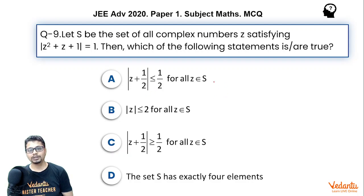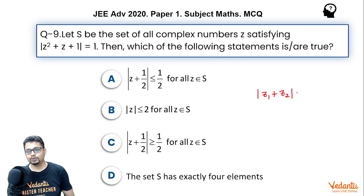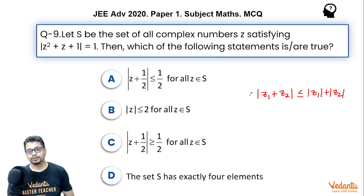Seeing the first options, let me tell you the concept we are going to use to comment upon the first three options: triangle inequality, which essentially states |z₁ + z₂| ≤ |z₁| + |z₂|, and the same expression |z₁ + z₂| ≥ the non-negative difference between |z₁| and |z₂|.